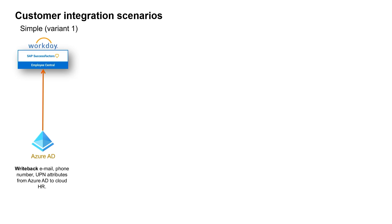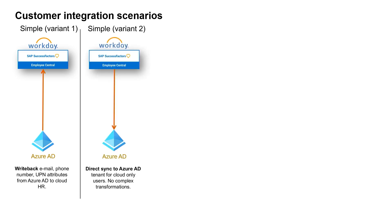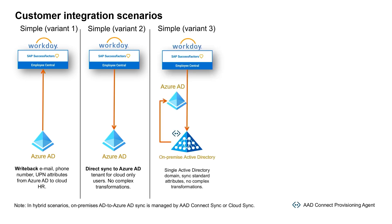It does not create any users. The second integration scenario enables direct flow of HR data to your Azure AD tenant. Use this integration if you have cloud-only users in your Azure AD tenant that don't need an on-premises AD account. The third integration scenario enables direct flow of HR data to your on-premises AD domain. Use this integration if you have a single AD domain and you want to sync standard user attributes with basic attribute transformations.